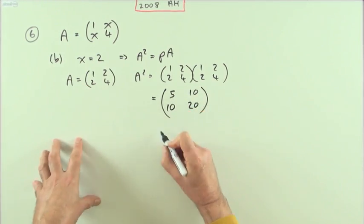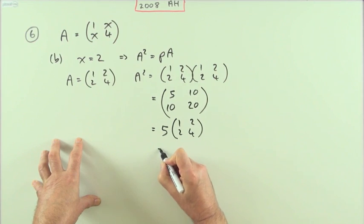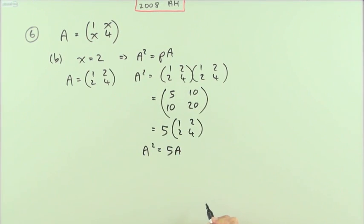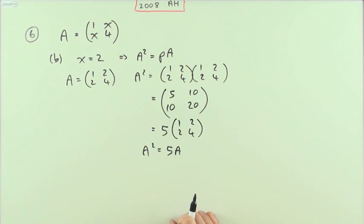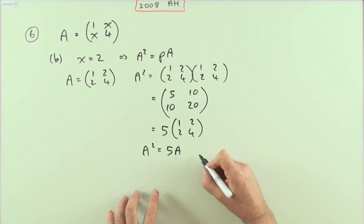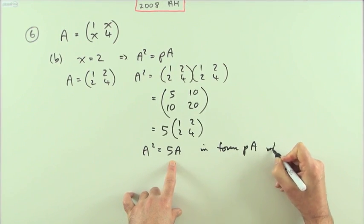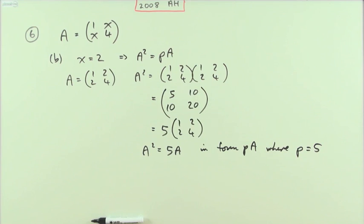And that's five times the original, so that equals five times (1 2; 2 4), which is the same as five times A. So A squared is five times A. Does it explicitly say state the value of p? You're never sure exactly what to do. It says for some constant p, so quite often for safety I might put in form pA where p equals five, just in case of OCD-ness in the marking.